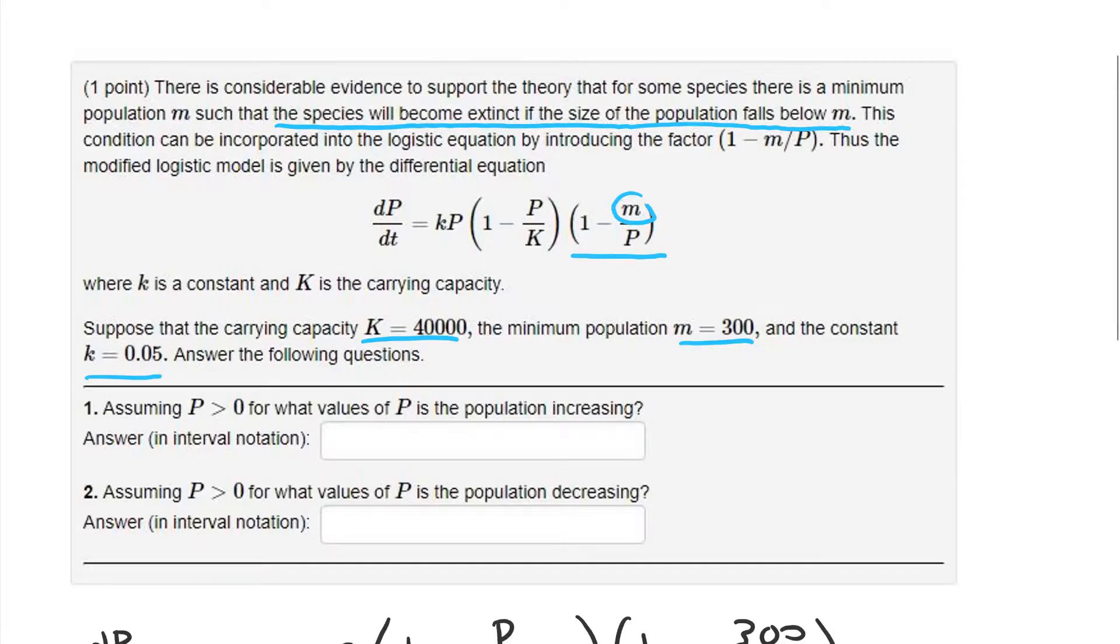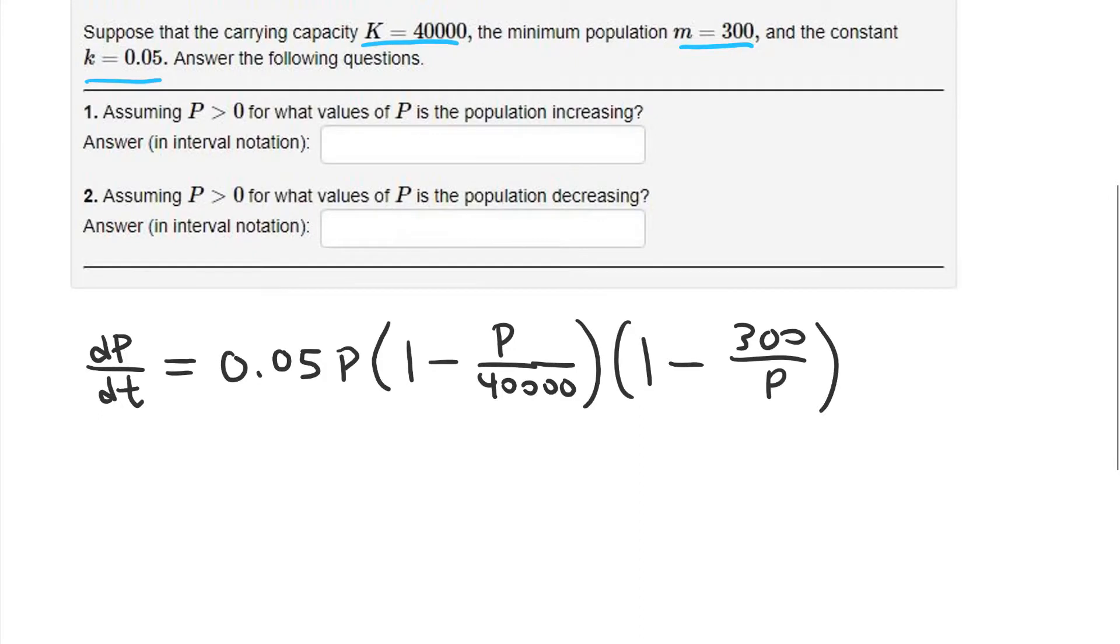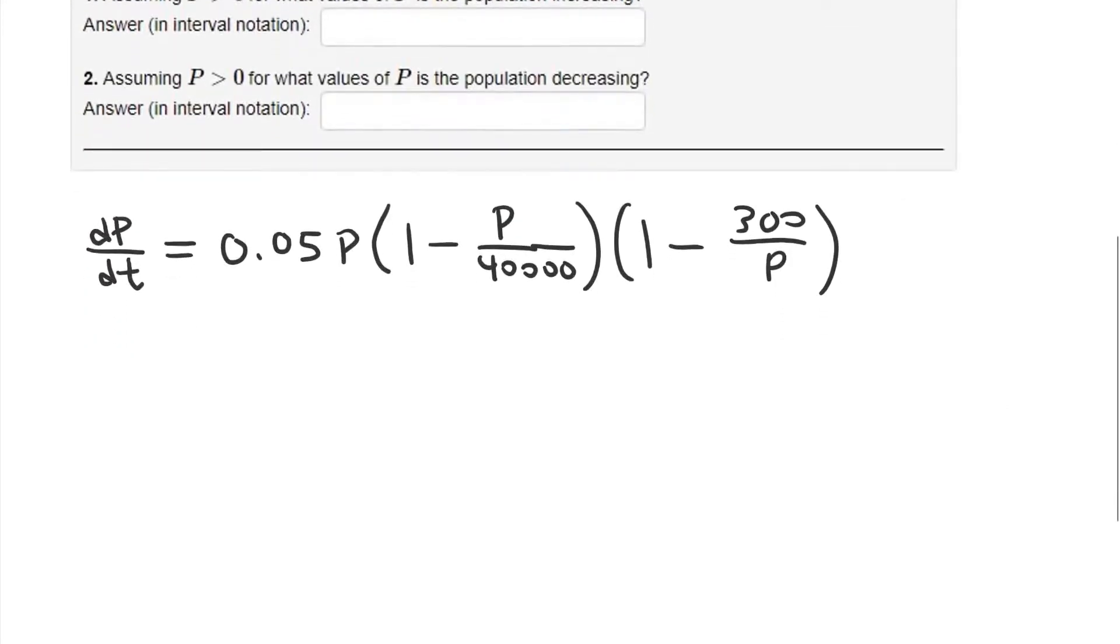So in other words, I plugged in the values here, and we're trying to find for what values of P is the rate of change of the population, dP/dt, greater than 0 and less than 0? Because if dP/dt is positive, then the population is increasing. And if the rate of change of the population is negative, then it's decreasing. So we're trying to solve that inequality. And what's helpful to do first is to solve the part, figure out where it's equal to 0.